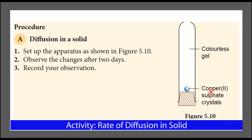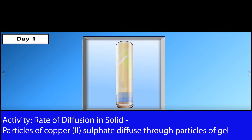Let's carry out an activity to look at the rate of diffusion in solid. After some days, the whole gel turned blue. This is because the particles of copper-2-sulfate have diffused through the particles of gel. Is the process fast or slow? Is it easy for the particles of copper-2-sulfate to move through the spaces between the particles of gel? Notice that the whole process takes about 5 days.